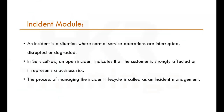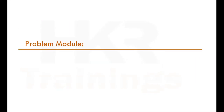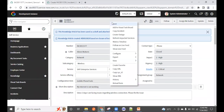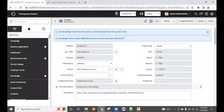A Problem is created when the same incident occurs repeatedly. For example, if your wireless issue keeps happening every day, it becomes a Problem. To create one, open an active incident, right-click, and select 'Create Problem.' A problem table opens where you fill in the relevant details. The problem is reported from the linked incident.